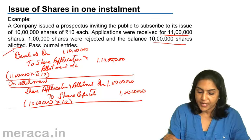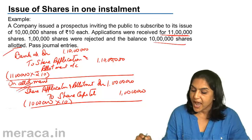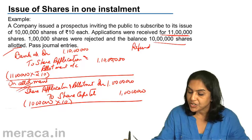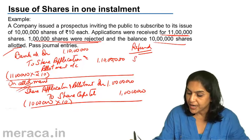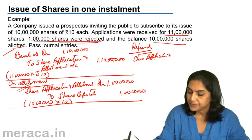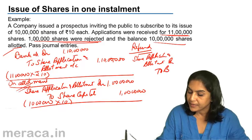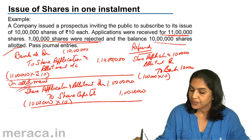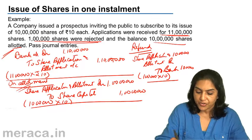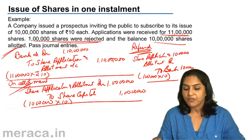On receipt of money, on allotment of shares, and one more transaction — refund — because 1 lakh shares are rejected. The entry for refund is share application and allotment account debit to bank, amount being 1 lakh shares of rupees 10 each. This is the complete scheme of entries: on receipt, on allotment, and on refund of shares.